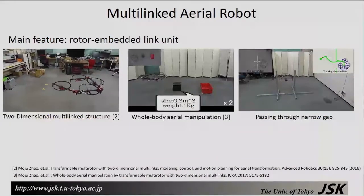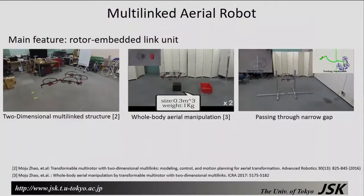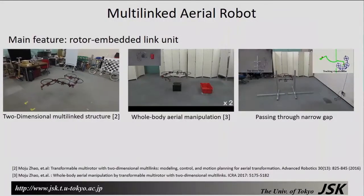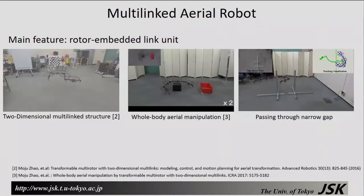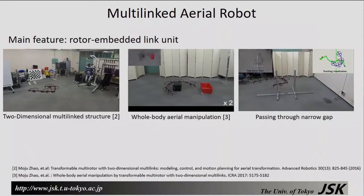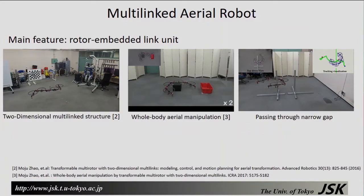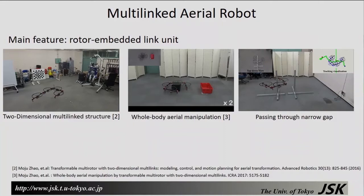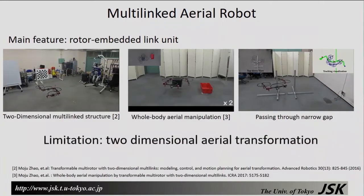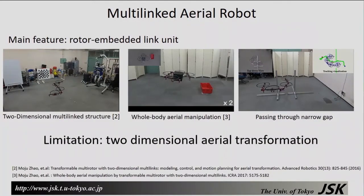In our previous research, an air robot with a two-dimensional multi-rotor structure had been first developed, and related unique work such as whole-body manipulation to grasp and carry objects, and the flight motion to pass through a narrow gap by transformation had been achieved. But there is a crucial shortage in this robot model: the aerial transformation is only two-dimensional and the application is limited.